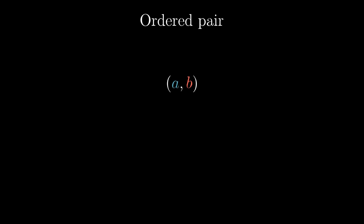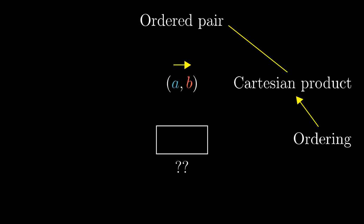An ordered pair should be a set encoding the elements A, B and also their order. Clearly, we cannot use ordering described in the part A of this video since ordering is based on a Cartesian product and an ordered pair. We need an elementary definition.